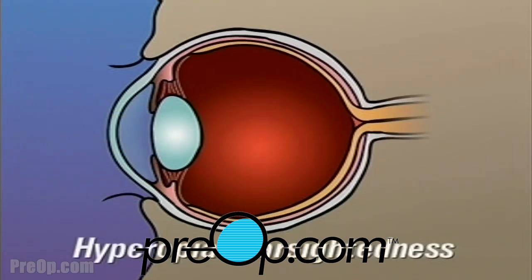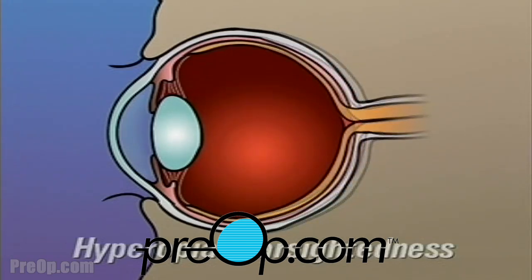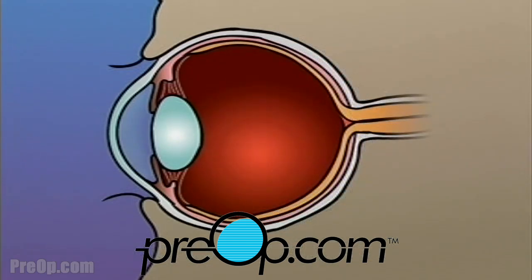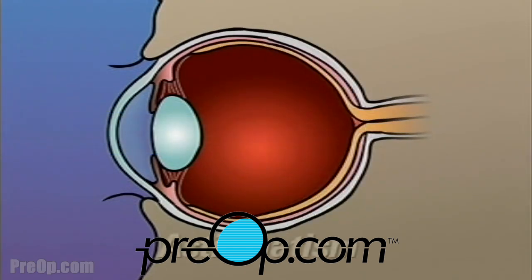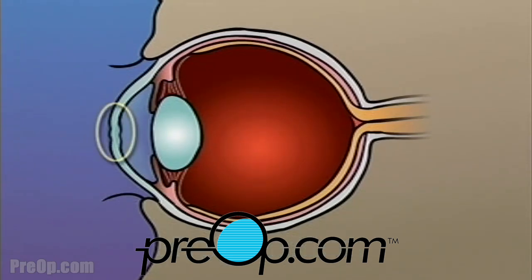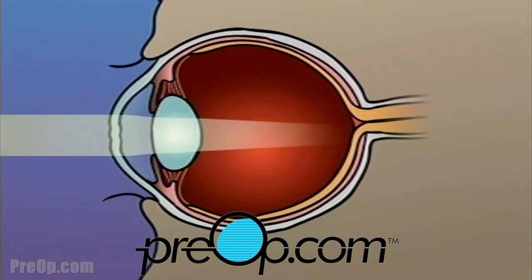Hyperopia, or farsightedness, occurs when the shape of the eye is too short. In this case, light rays are focused on a point behind the retina. Astigmatism occurs when the cornea is unevenly curved, causing light rays to fall off-center or not to focus properly at all.